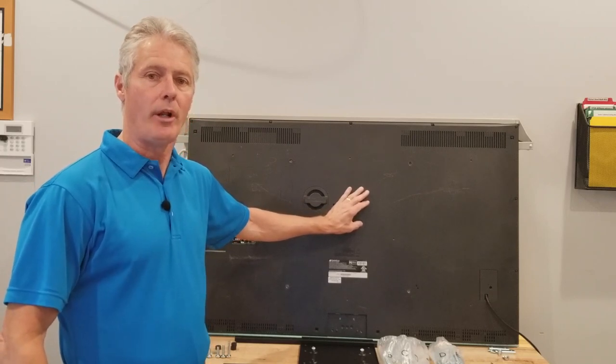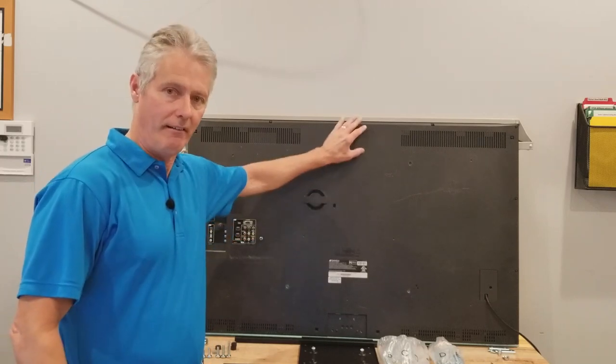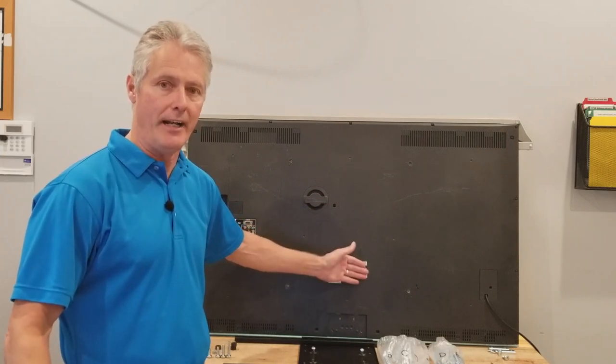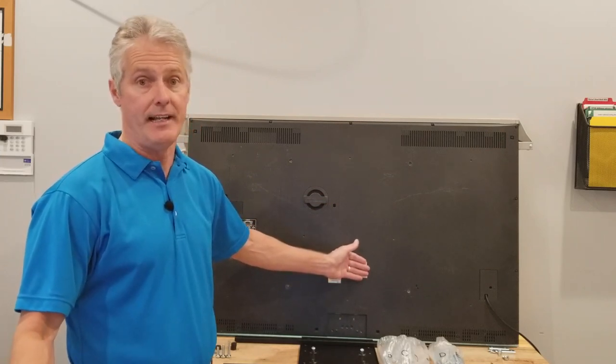When you take your TV out of the box, the first thing we want to look at is the contour of the TV. In this case it's flat on the back. Your TV may have an offset at the bottom, which is typically thicker.